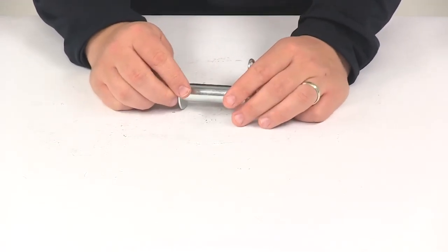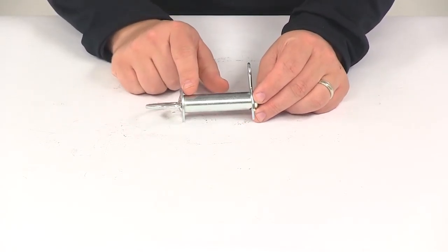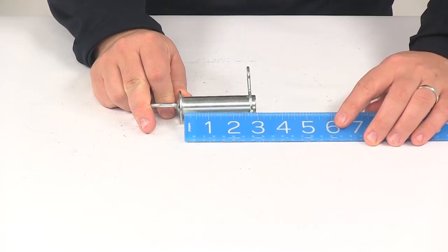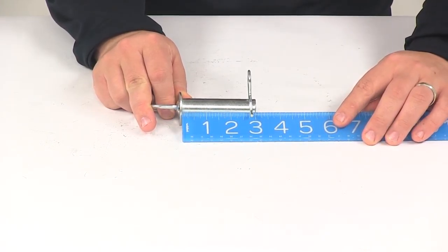If we take a measurement of the usable pin length, what I'm doing is I'm measuring from the bottom of the head to the clip. That's going to give us a usable pin length of about two and five eighths of an inch.